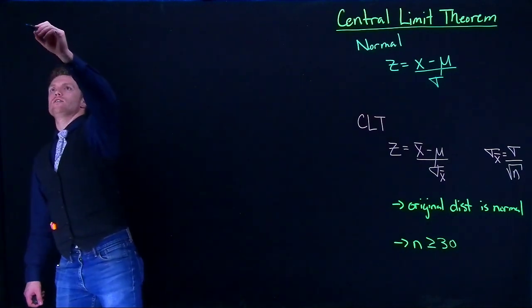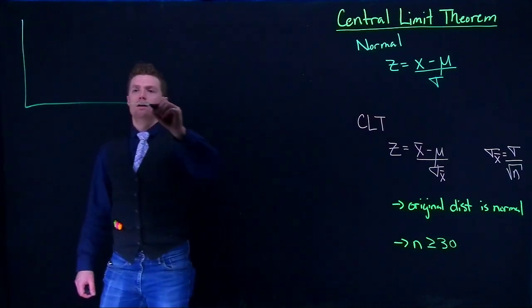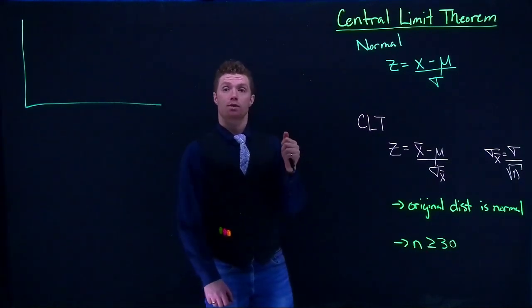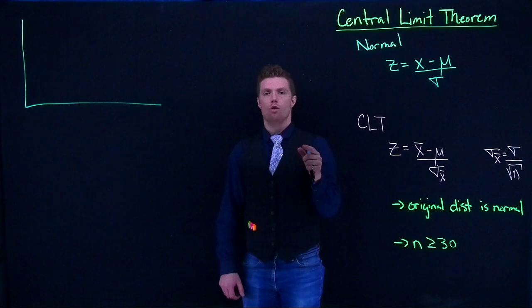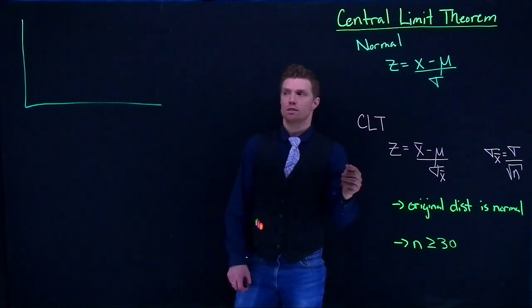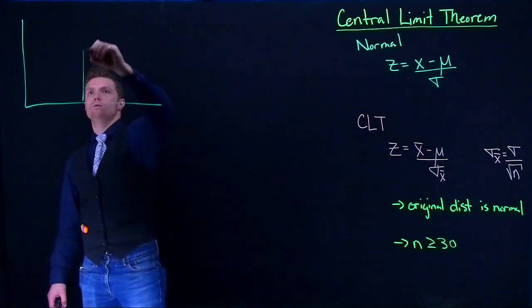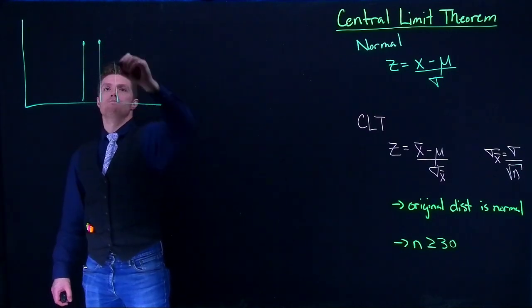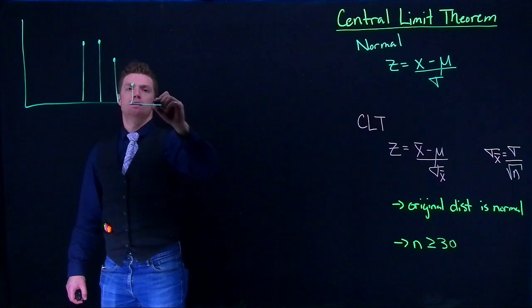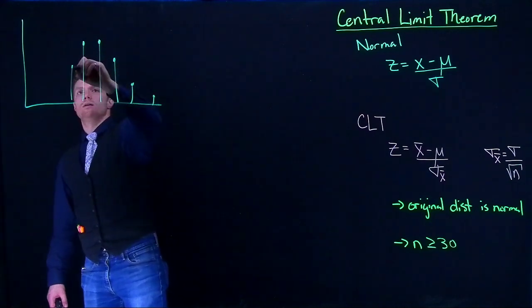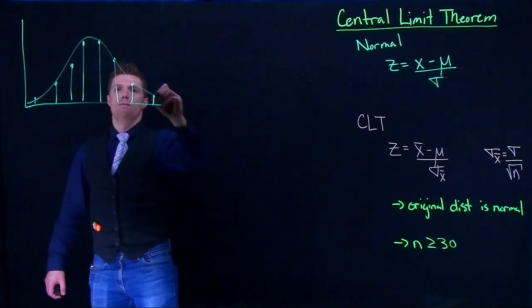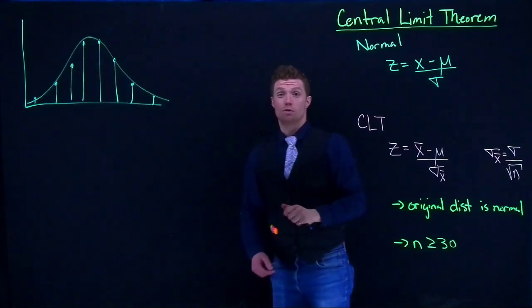We're going to go back and talk about the binomial distribution, when we were talking about number of successes over a certain number of trials. Sometimes those probability mass functions when graphed out kind of looked like a normal distribution.